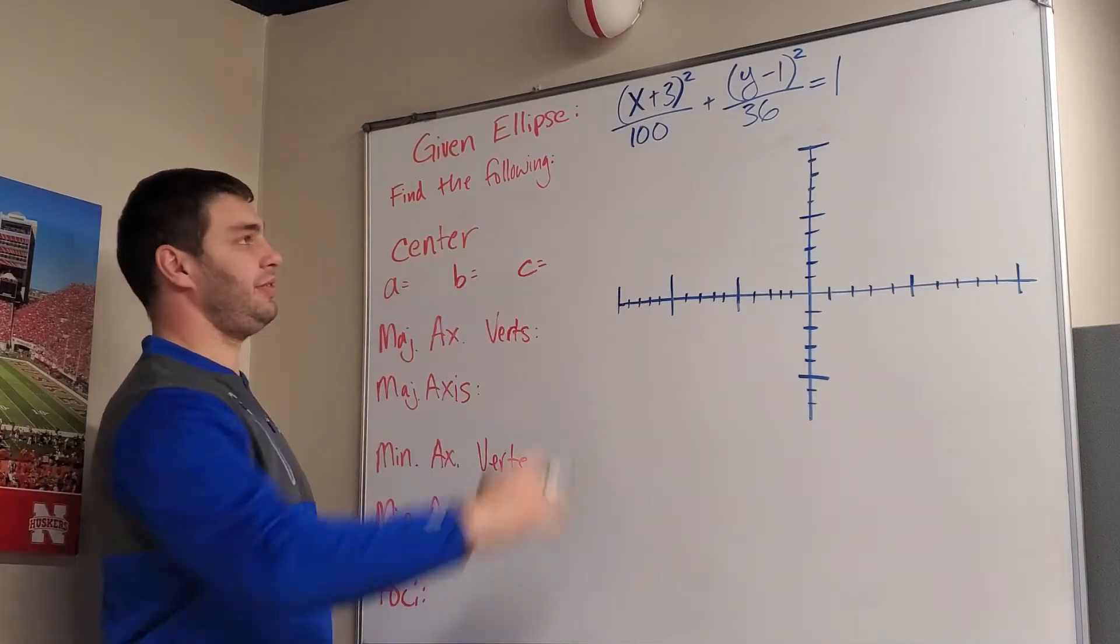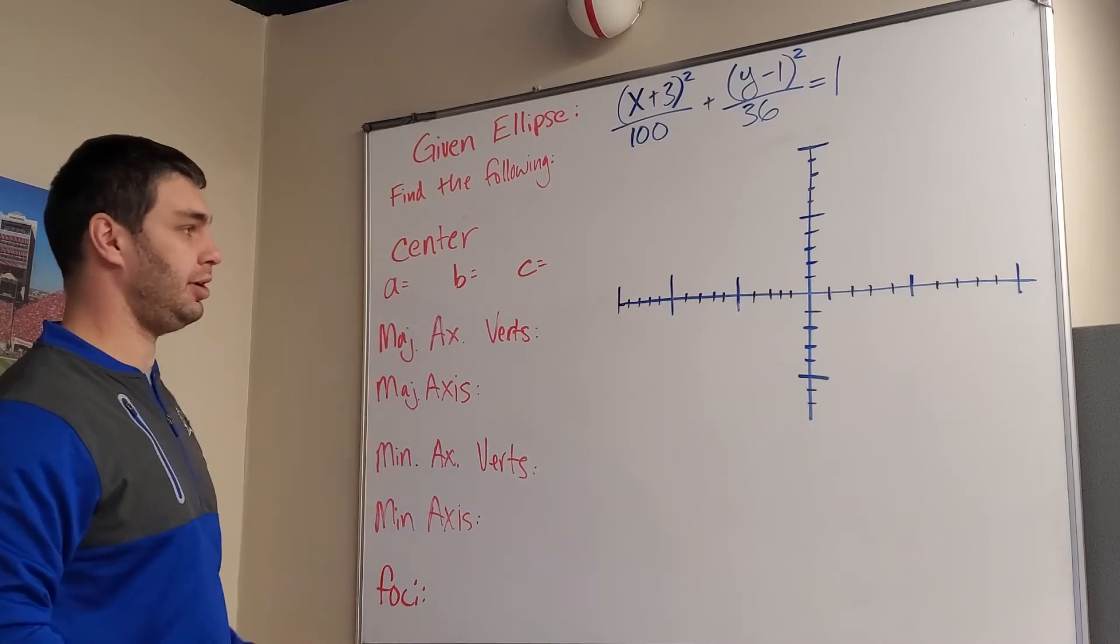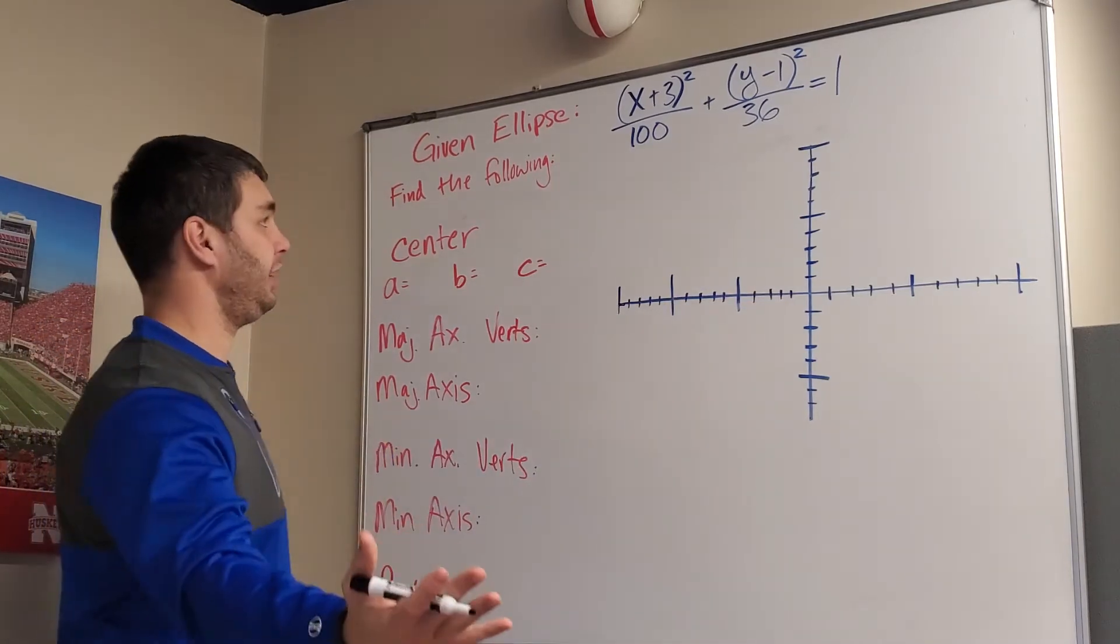Alright guys, in this problem it says given this ellipse over here, we're going to find the following: the center, the ABCs, and so on, and then we're going to graph it. So let's try it here.